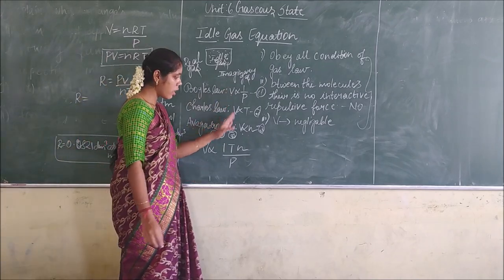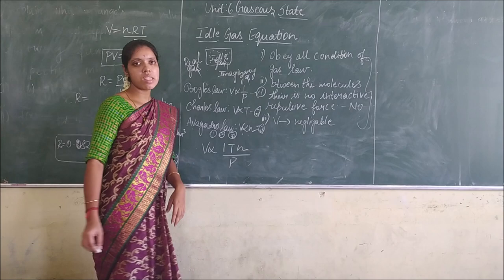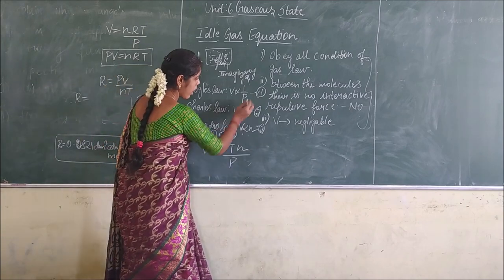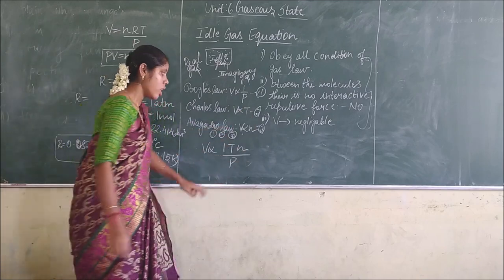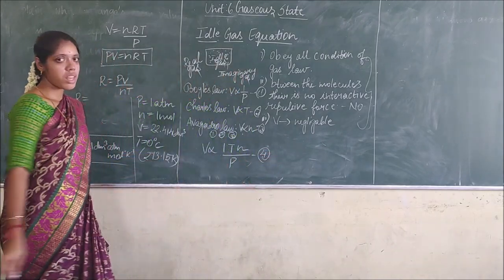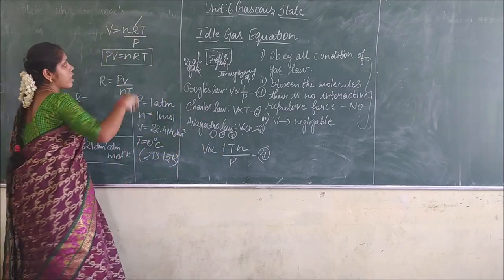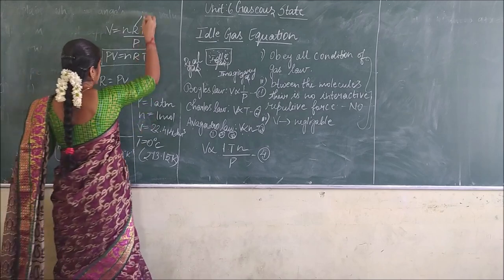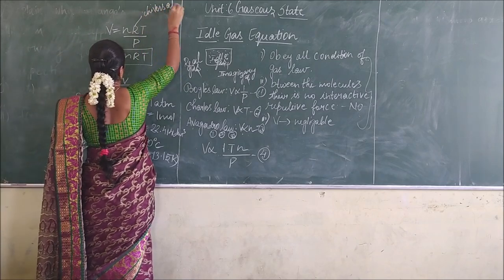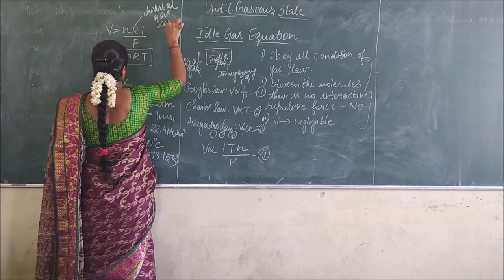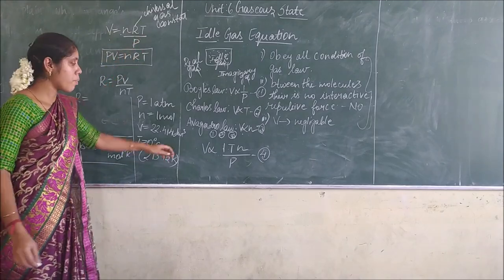If we compare all the equations, volume is common in everything. So volume is directly proportional to T, number of moles n, and inversely proportional to pressure P. If you see: V = nRT/P, where R is the universal gas constant. So PV = nRT.